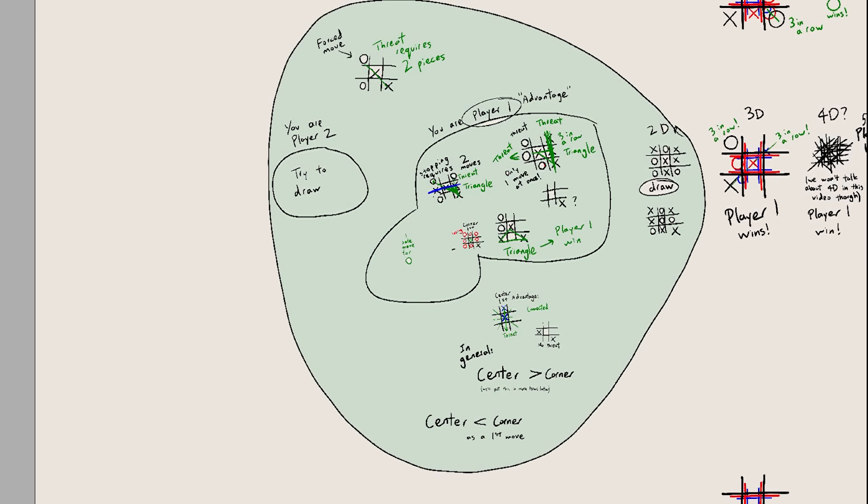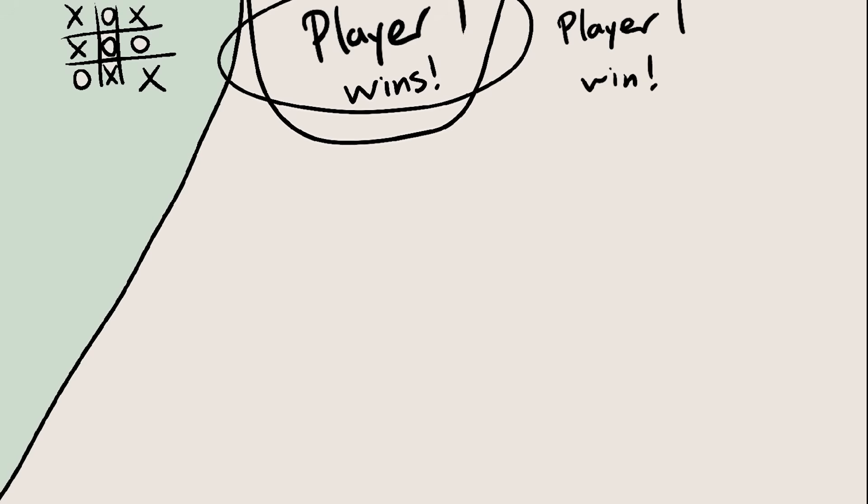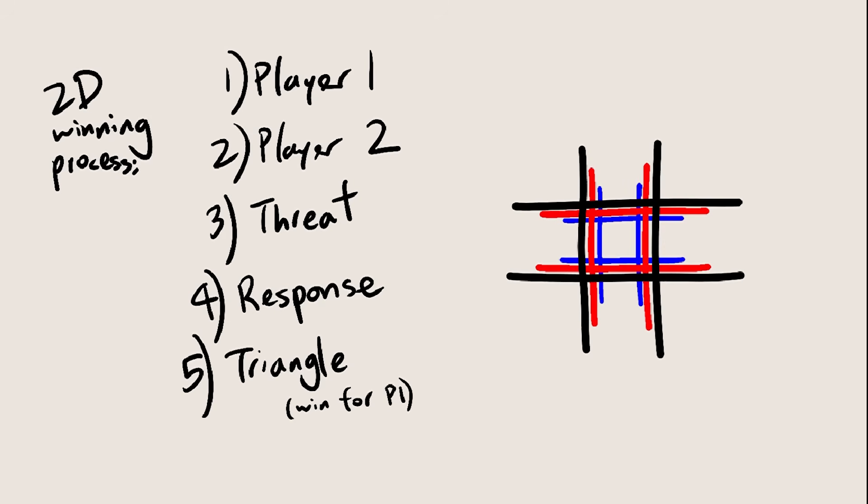Alright, now that we understand 2D tic-tac-toe, time for 3D. Why does player 1 win in 3D? What's the winning strategy? Let's try using the same winning process as we did in 2D. We go first, player 2 goes second, we create a threat. Player 2 is forced to respond, and we make a triangle, which is two threats at once. Okay, let's take the corner first, since that was the best in 2D. Player 2 should probably go in the middle if they want to not lose. After all, it was the best option in 2D tic-tac-toe.